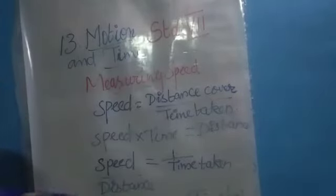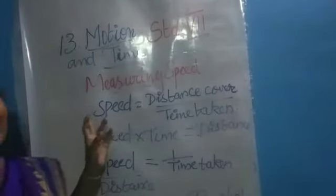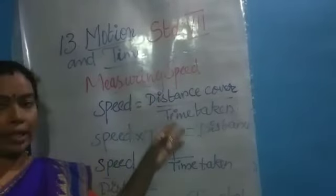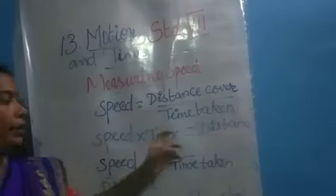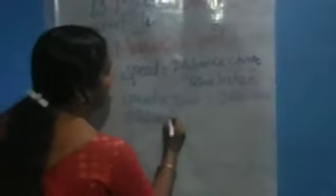So to summarise: if speed is asked, the formula is speed equals distance divided by time taken. If distance is asked, the formula is distance equals speed multiplied by time. If time taken is needed, the formula is time taken equals distance divided by speed.